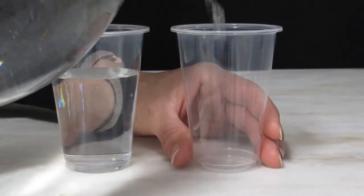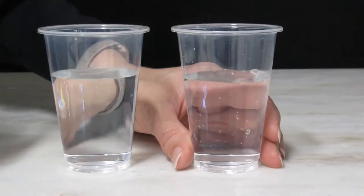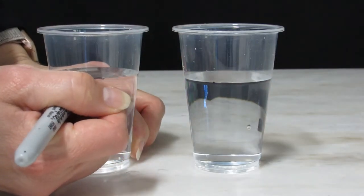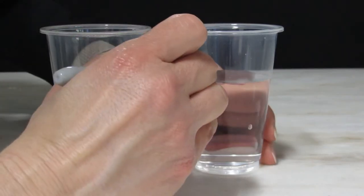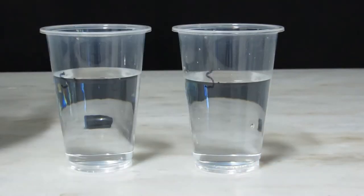Pour water into each of the cups, then carefully mark the water line. I'm writing an S for start next to my lines. Leave one cup at room temperature and put the other in the freezer overnight.